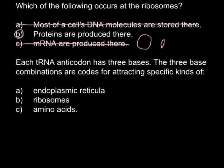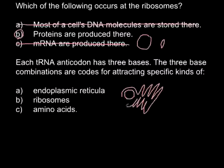Answer A is endoplasmic reticulum. Imagine this is the endoplasmic reticulum — it can be of two kinds: smooth and rough. But no matter smooth or rough, there are ribosomes here that serve for production of proteins. So this is an incorrect answer and we can cross it out.